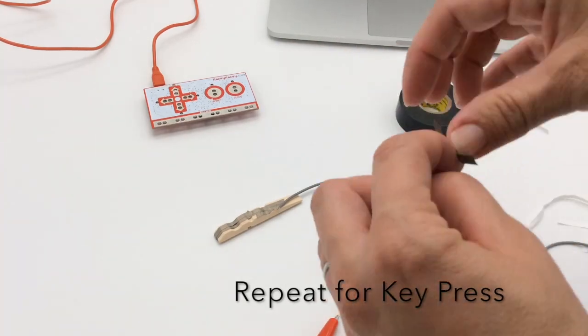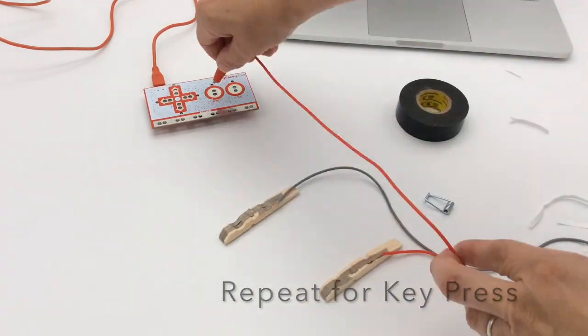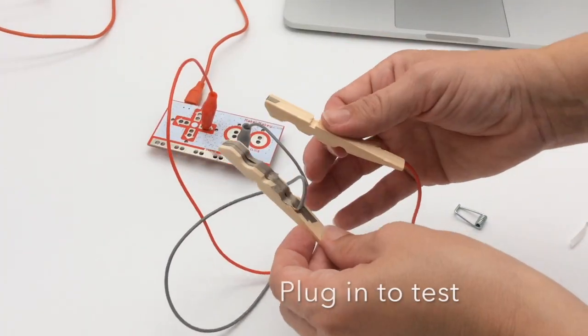Your goal is to wire one for the key press input and one for the earth input. Plug them in to test.